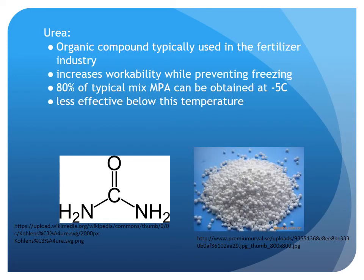Another compound used for cold weather concreting is urea. Typically urea is used in the fertilizer industry, but it has been shown to have some good effects when working with cold weather concrete. Similar to antifreeze, it allows the concrete to gain strength at negative temperatures. It has been shown that up to 80% of a typical control mix strength can be obtained at minus 5 degrees Celsius, but it has been shown to be less effective below this temperature. Urea also increases workability while preventing freezing.